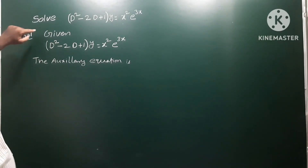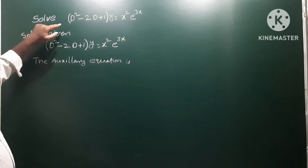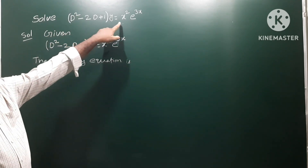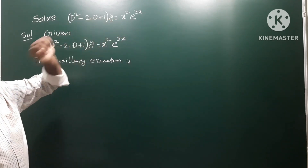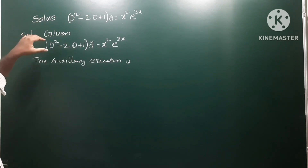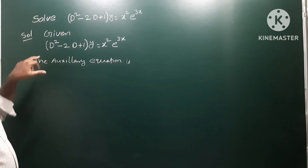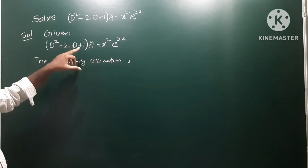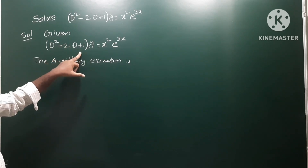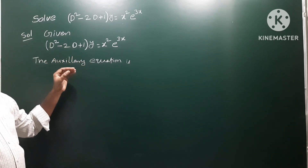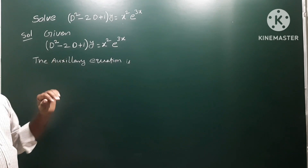The problem is: solve (D² - 2D + 1)y = x² · e^(3x). We have to solve this equation. First, write the given equation. We have to find the complementary function and the particular integral.